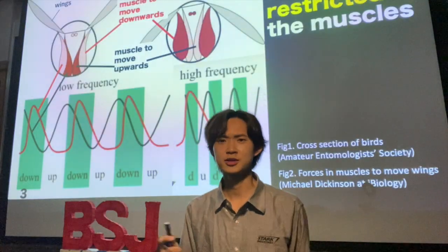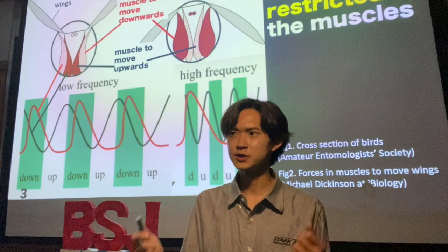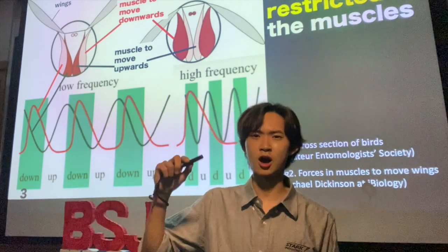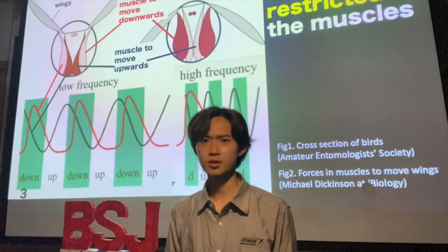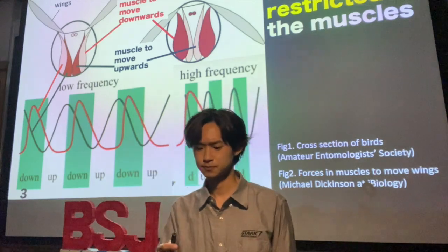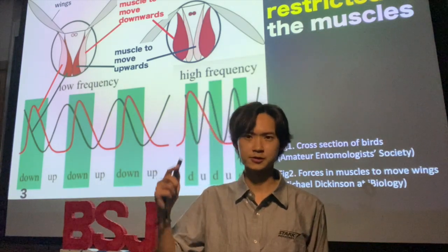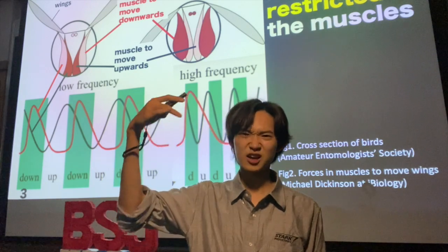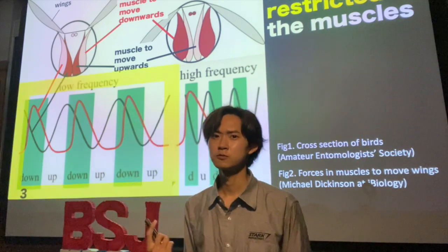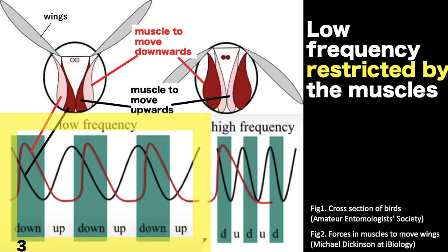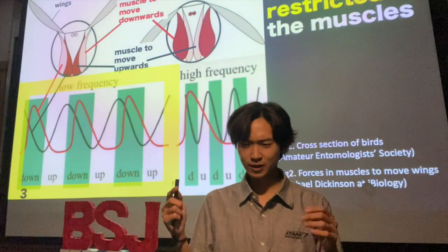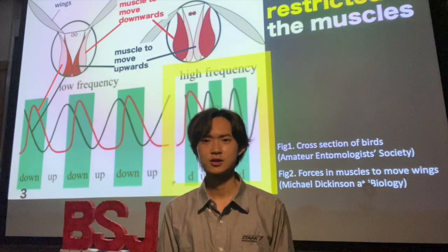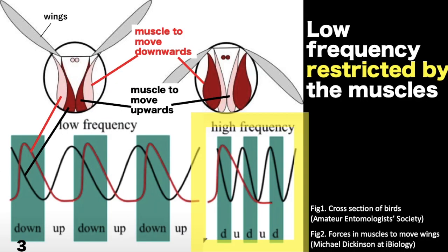First, I will talk about what determines the flapping frequencies of birds and old-type insects. They use two types of muscles to move their wings: muscles to move wings upwards and downwards. When flapping at low frequency there is no problem, because each muscle can be activated and deactivated in turn. But when flapping at high frequency, the two muscles fight against each other, because it takes time to deactivate muscles.